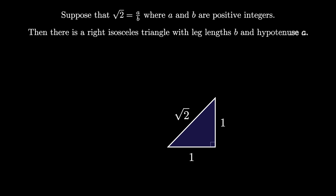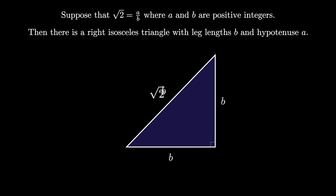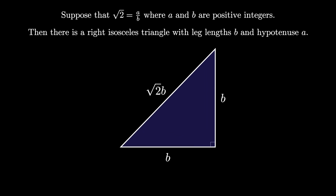Because the square root of 2 is a divided by b, we can scale this triangle by b, and we end up with a right isosceles triangle with legs of length b and a hypotenuse of square root of 2 times b. But because square root of 2 times b is a, that means there is a right isosceles triangle with leg lengths b and a hypotenuse of a.